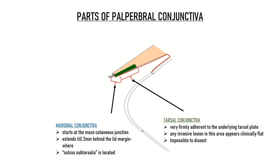Then comes the tarsal conjunctiva. It is the part of the palpebral conjunctiva which is very firmly adhered to the underlying tarsal plate. This green structure visible here is the tarsal plate. It is very adherent on the tarsus of the upper eyelid and also quite adhered to the tarsus of the lower eyelid. Because the conjunctiva is so firmly adhered to the tarsal plate, any invasive lesion in this area appears clinically flat, as there is no potential space for expansion. This firm adherence also makes dissection of the tarsal conjunctiva almost impossible, because no tissue plane exists between the tarsus and the overlying tarsal conjunctiva.